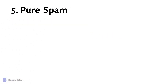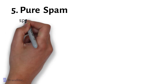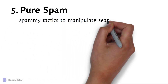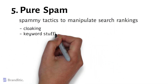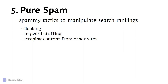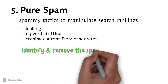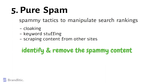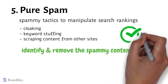Pure Spam refers to sites that use spammy tactics to manipulate search rankings, such as cloaking, keyword stuffing, or scraping content from other sites. To fix this penalty, you need to identify and remove the spammy content and make sure to follow Google's guidelines when optimizing your site.